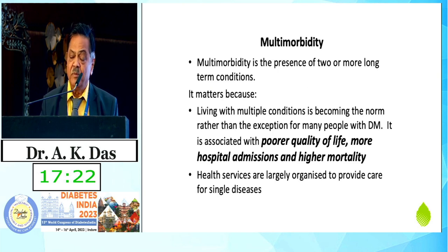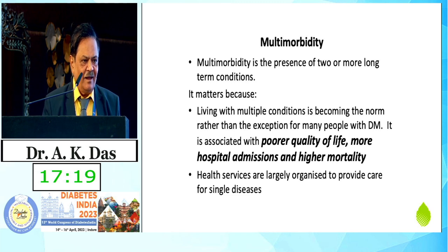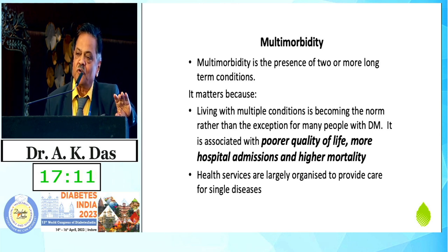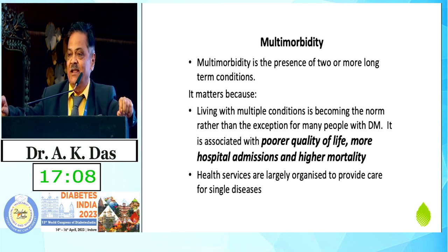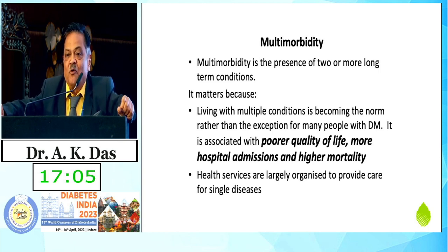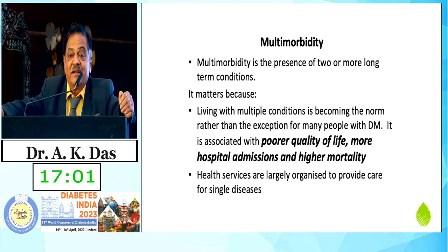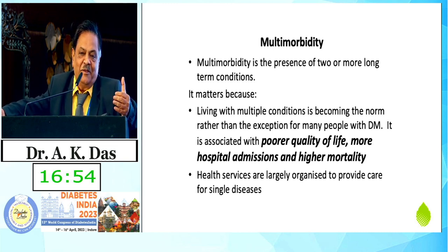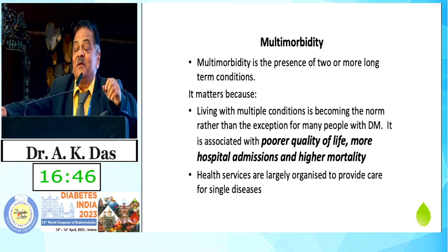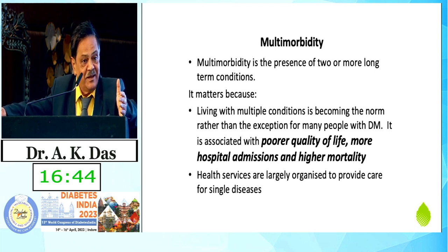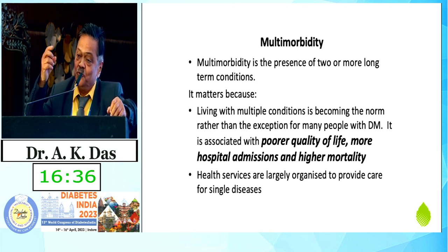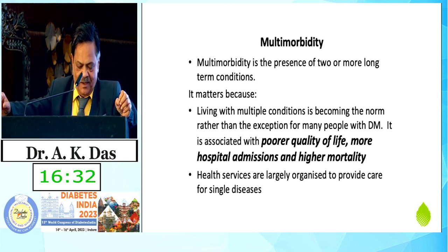Coming to the epidemiology of multimorbidity as a whole — what is multimorbidity? I like simple things; the simplest things are the greatest. Multimorbidity is the presence of two or more long-term conditions. If it is single, we call it comorbidity. If the comorbidity is related to diabetes directly, we call it concordant — neuropathy, retinopathy, nephropathy are concordant comorbidities. But epilepsy and mental conditions that can occur in diabetics are discordant comorbidities. When this association is with more than two other diseases, we call it multimorbidity.